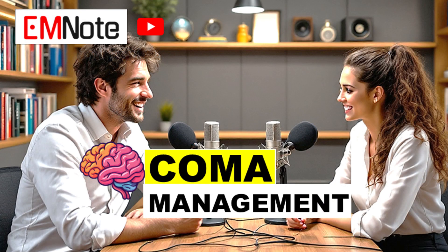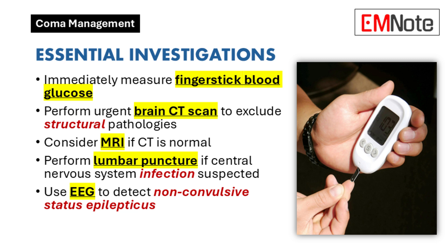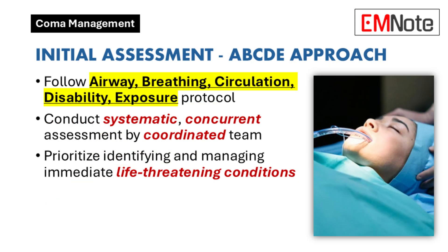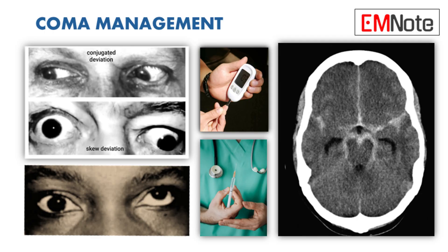So we've got the ABCs, the GCS, and the pupils — what's the next absolutely essential thing? Especially in the ER: a finger stick blood sugar. Hypoglycemia is so easy to miss, but it's such a quick fix if you catch it early — just give them glucose and they're good to go. As the saying goes, when you hear hoofbeats, think horses not zebras. Sometimes the simplest explanation is the right one.